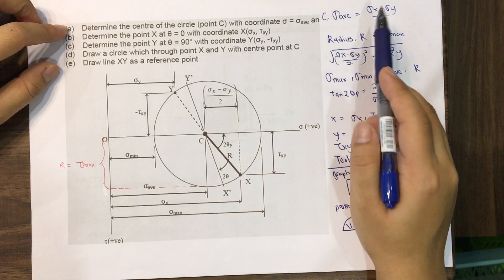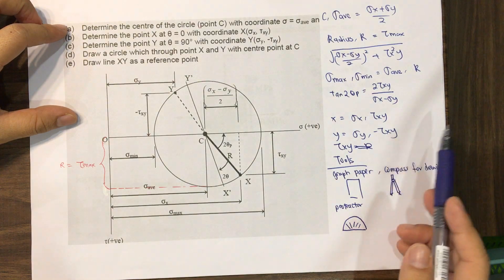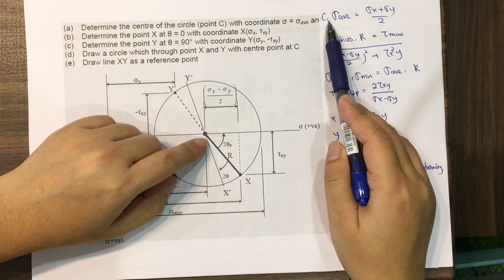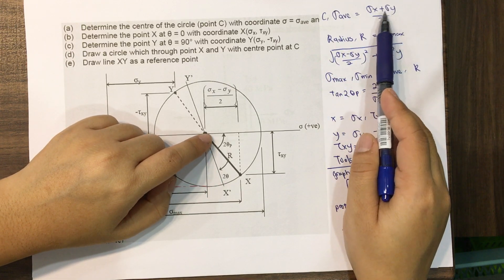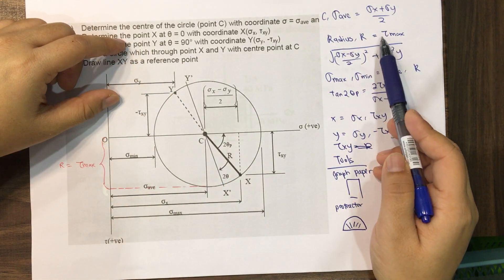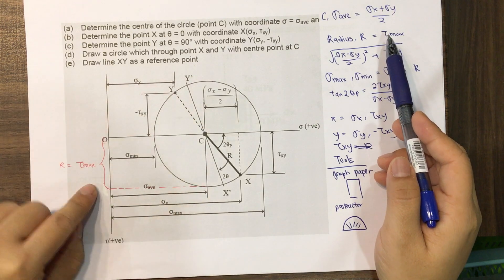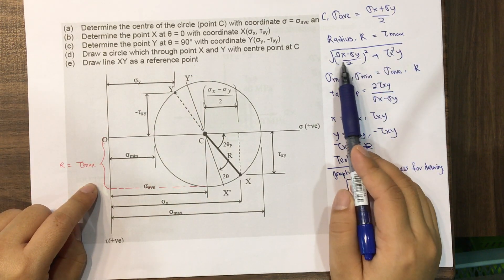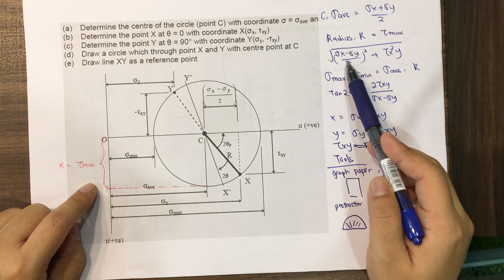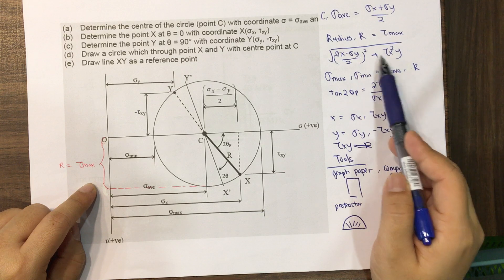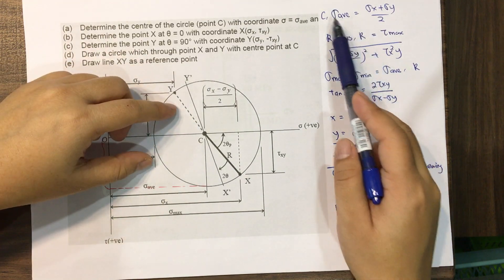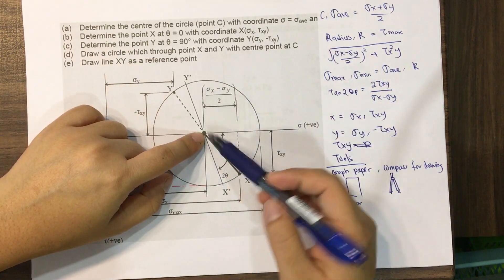Here are the key equations needed for Mohr's Circle. The centroid C is sigma_x plus sigma_y over two. The radius — which also equals tau_max — is the square root of ((sigma_x minus sigma_y) / 2)² plus (tau_xy)². From these two values we can already construct the circle.